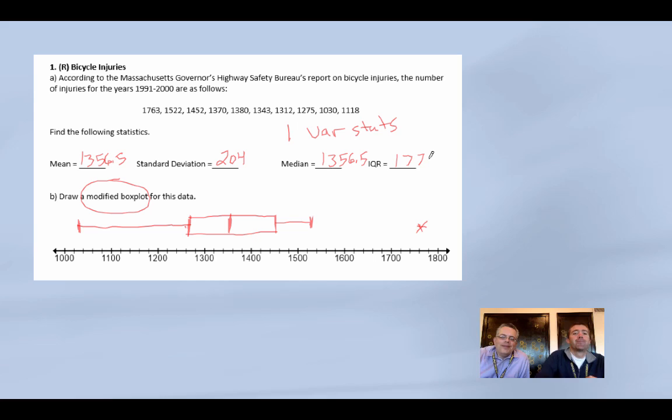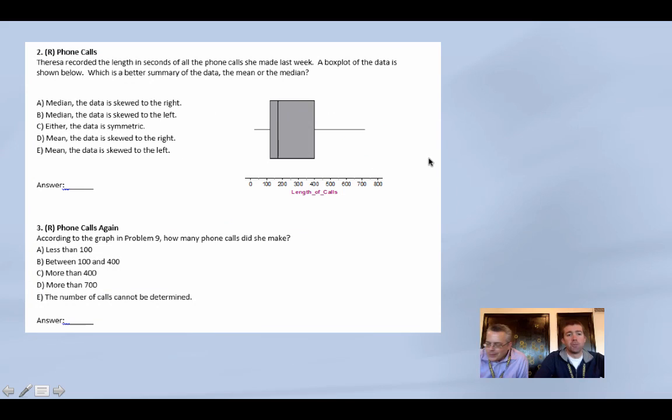Q3 is 1,452. The highest value that's not an outlier is 1,522, so right around here. And then you got the big point, 1763. That was a good year. So if it's a regular box plot, it'll be marked wrong. So if it asks for a modified box plot and it has outliers, gotta show them.